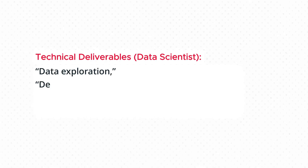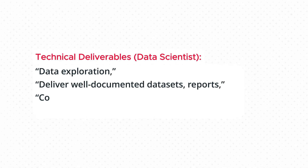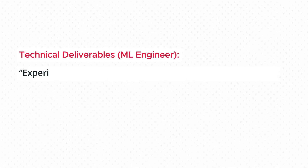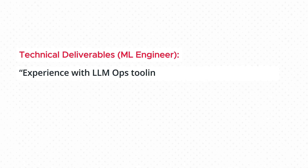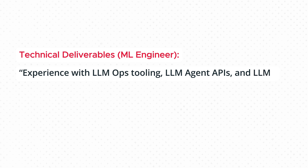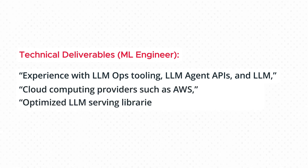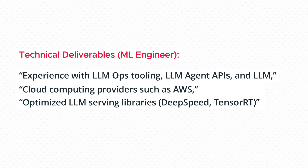In terms of technical deliverables, the data scientist role mentions data exploration, delivering well-documented data assets and reports, and computing and validating appropriate metrics. Meanwhile, the machine learning engineer role mentions experience with LLM ops tooling, LLM agent APIs, cloud computing providers such as AWS, and optimizing LLM serving libraries such as DeepSpeed and TensorRT.